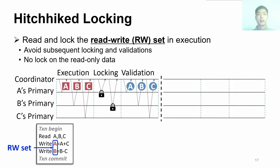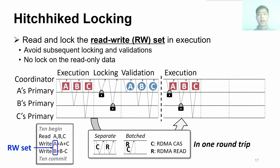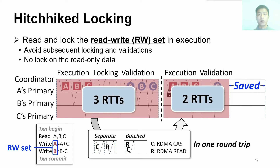To reduce latency, our hitchhiked logging scheme reads and logs the read-write set in the execution phase. The log request is attached to the read request in a hitchhiker manner. Therefore, we don't need to log and validate the read-write data after the execution phase, since they cannot be modified by other coordinators, thus saving round trips. To implement this scheme in one round trip, we batch the RDMA CAS and read to first lock the data and then fetch it. If locking fails, the transaction aborts. Our hitchhiked locking is different from two-phase locking since we do not add any lock on read-only data, maintaining the benefit of lock-free OCC. We can see that prior systems need three RTTs until validation, while FORD only needs two RTTs.